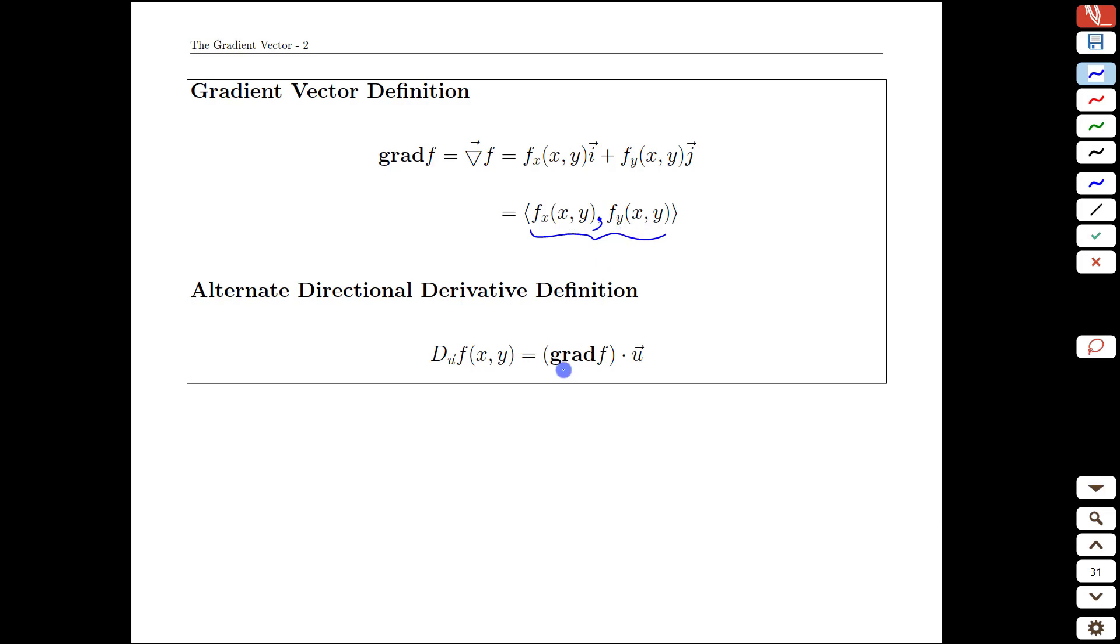With that definition, we can get the slope in a particular direction and just a quick note here, the slope in a particular direction is a scalar value. How steep is the surface in the direction of u? Well, that's a number. The gradient is something different. It's a vector built off the point we're at on the surface.